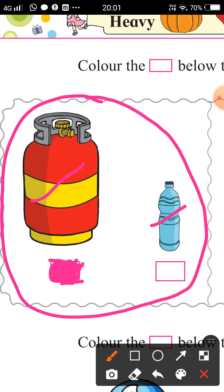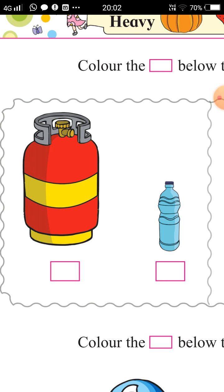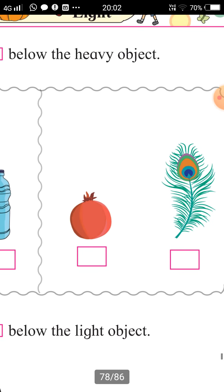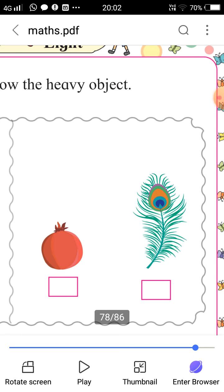Which object is heavy in this picture? Gas cylinder is heavy. Okay? So I fill this square under the gas cylinder. You color at this place because gas cylinder is heavier than a water bottle.